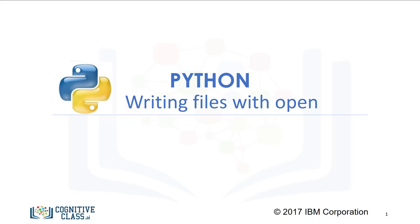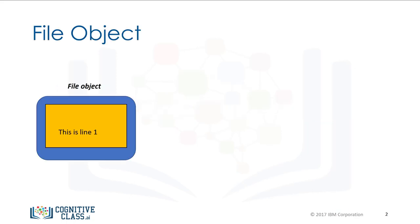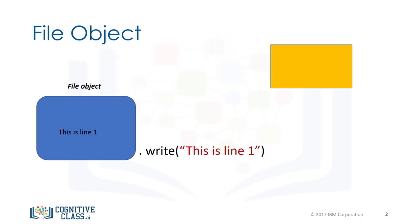We can also write to files using the open function. We will use Python's open function to get a file object to create a text file. We can apply method write to write data to that file. As a result, text will be written to the file.